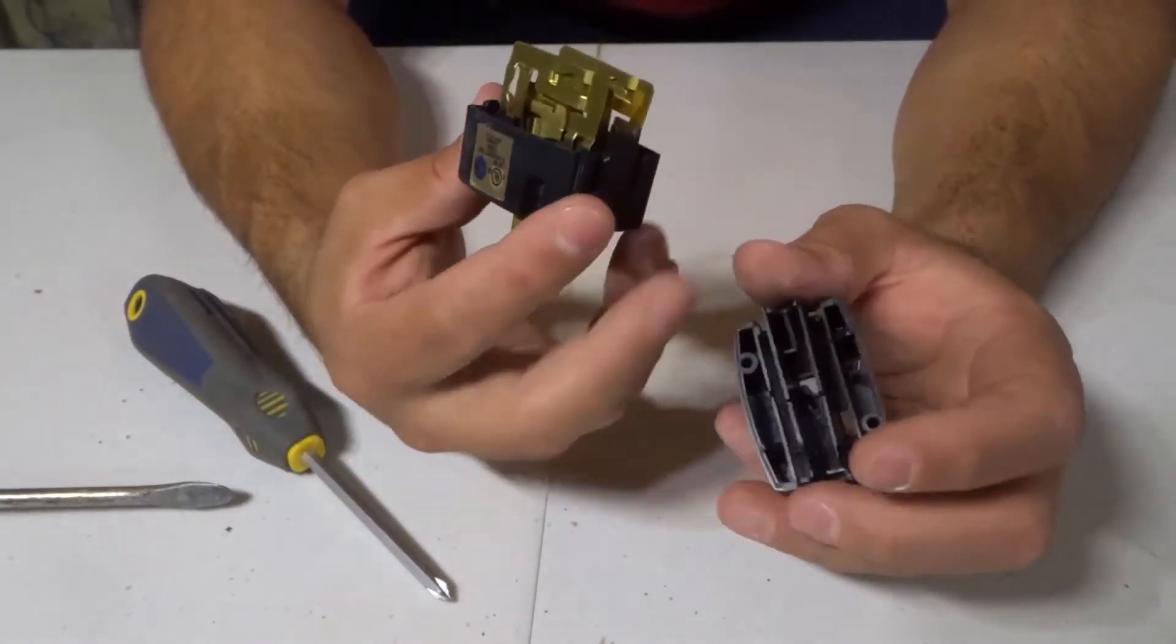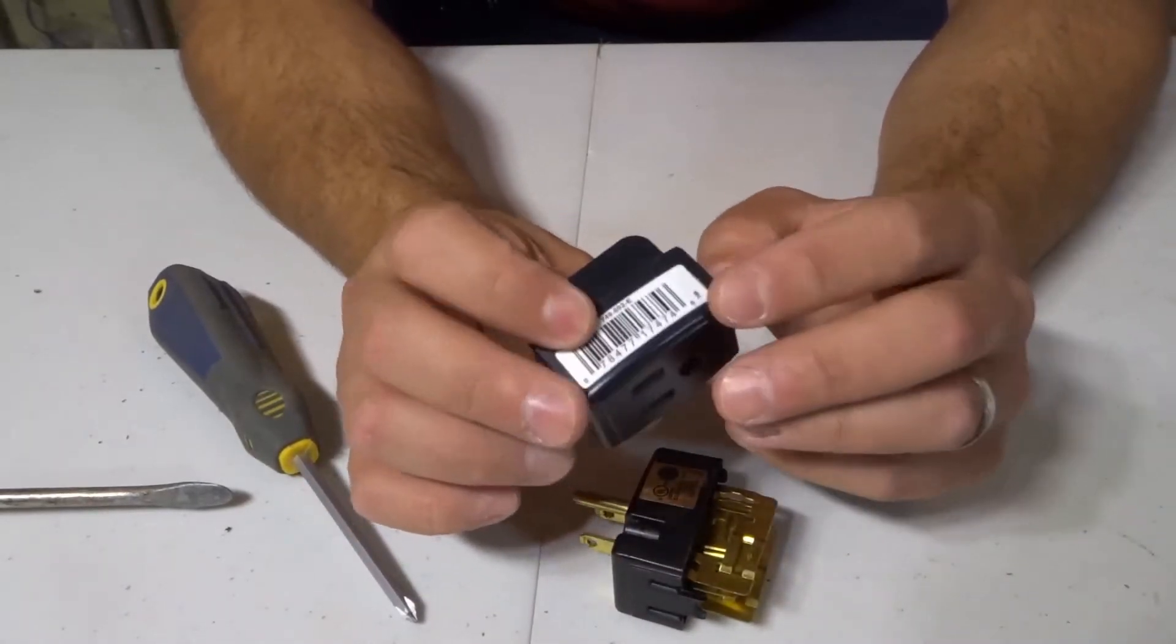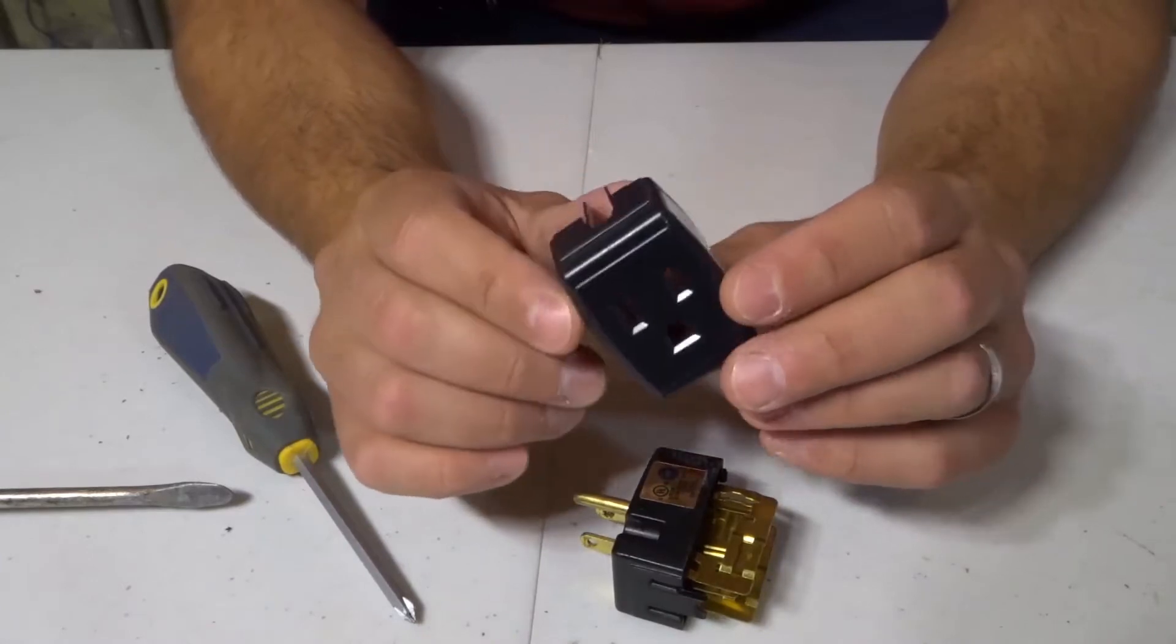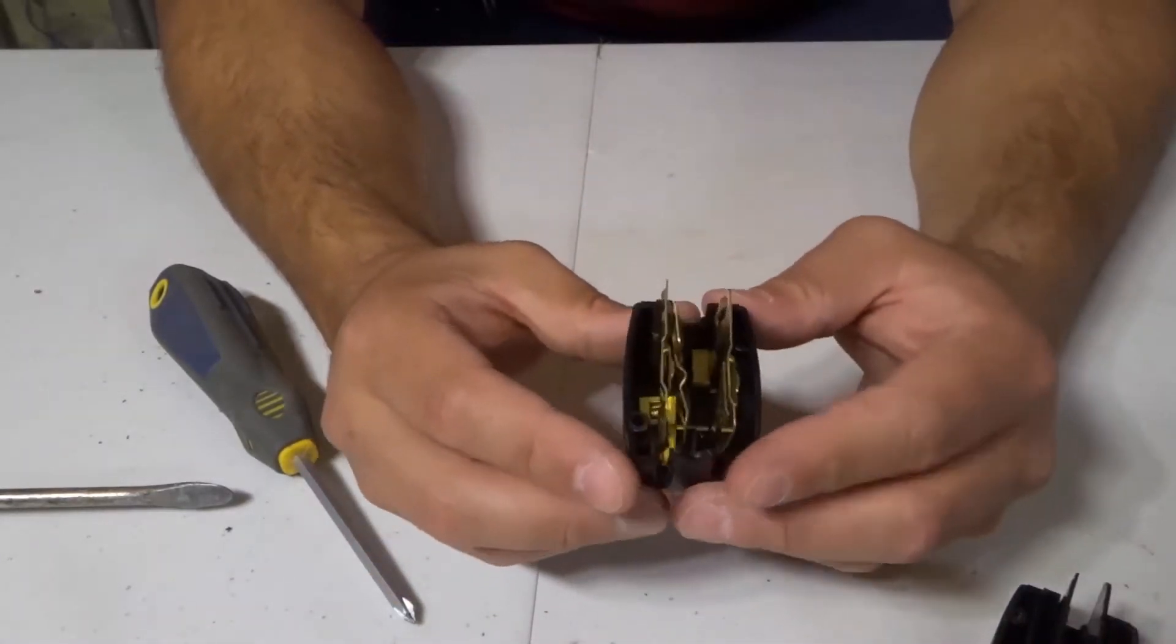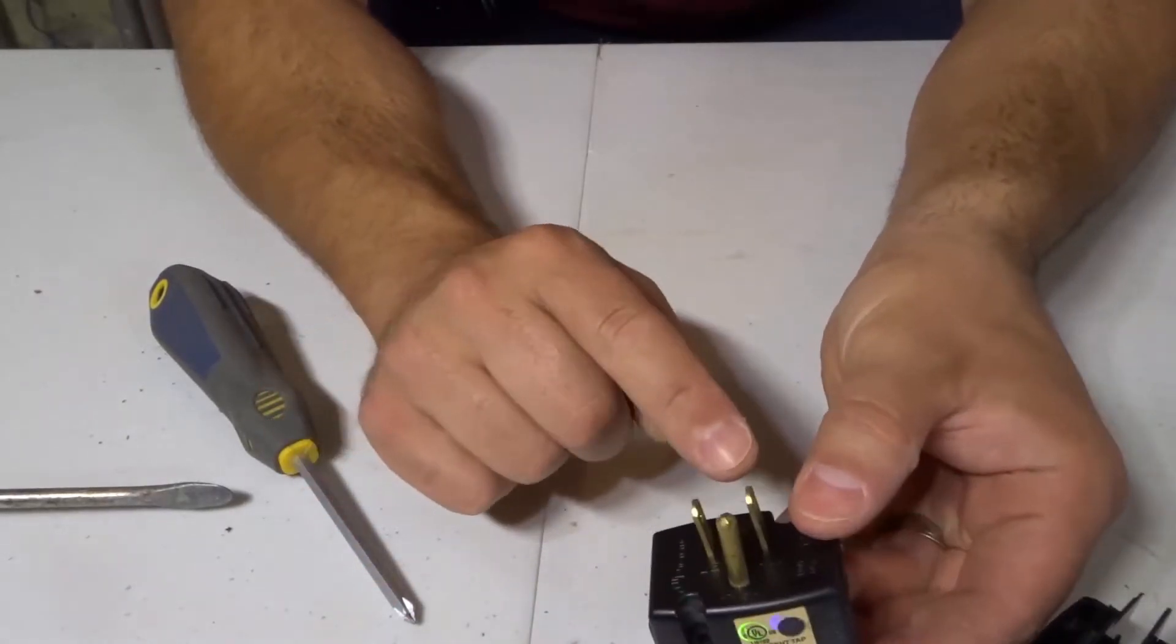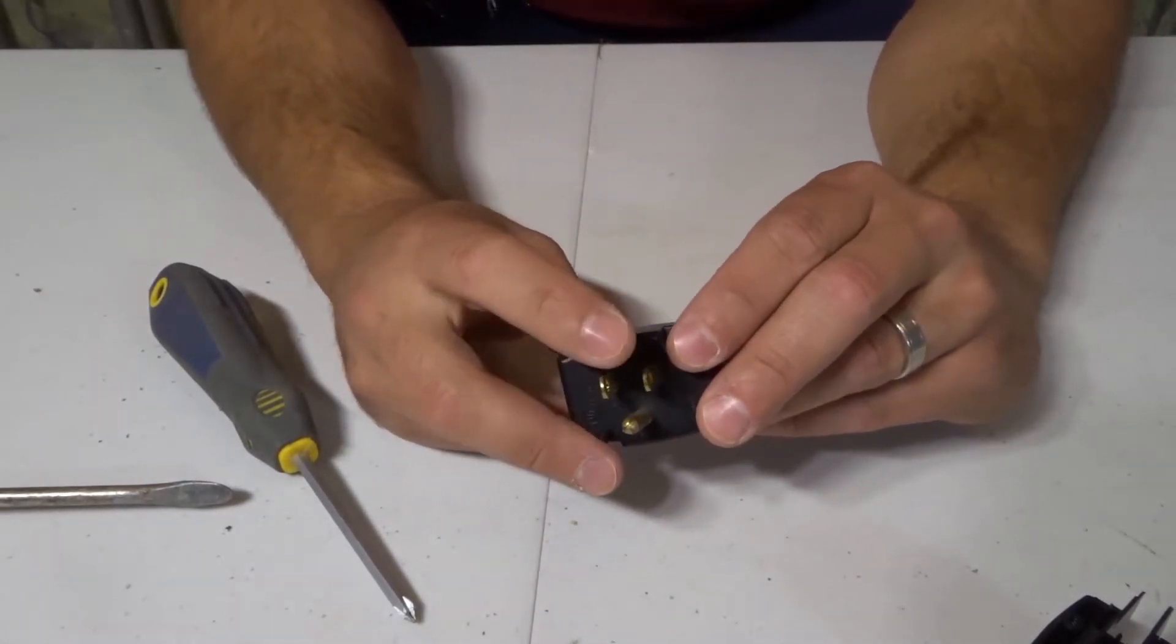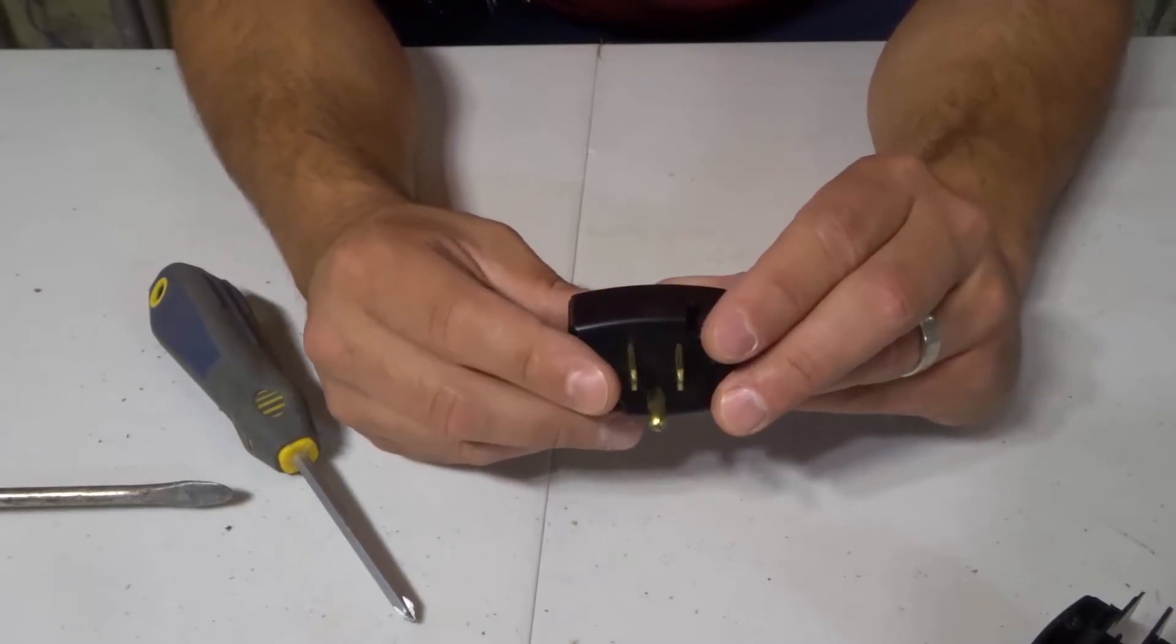Look at how simple this is. All that this is over here, this end, is literally just a plastic piece that houses everything and separates everything. Now I'm gonna hold these in place. If you look over here you have your two prongs and then your ground pin right here.